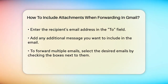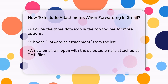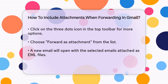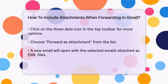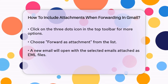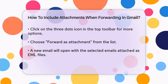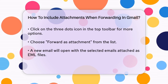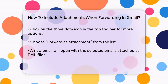If you need to forward multiple emails as attachments, the process is a bit different but still easy. Start by selecting the emails you want to forward by checking the boxes next to them in your inbox. Then click on the three dots icon in the top toolbar, which will show you more options. From this list, select Forward as Attachment.